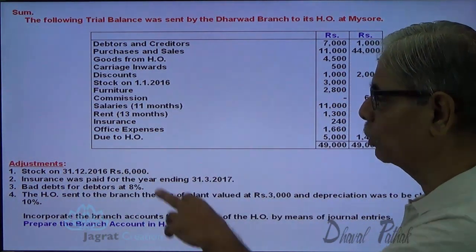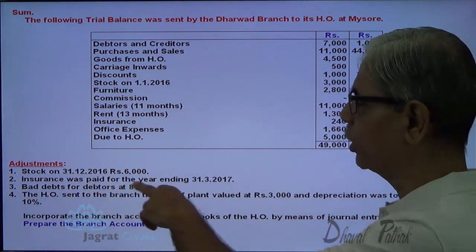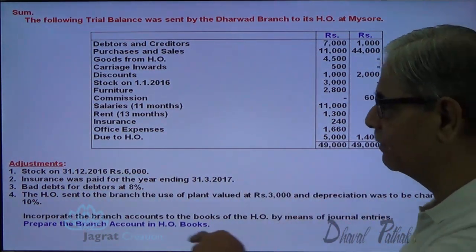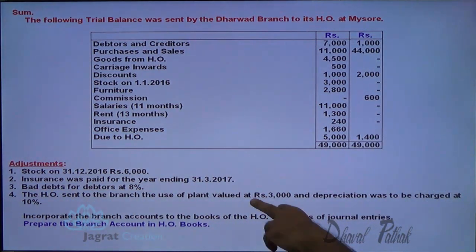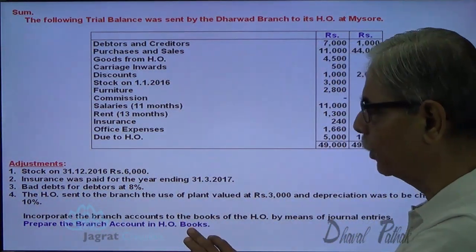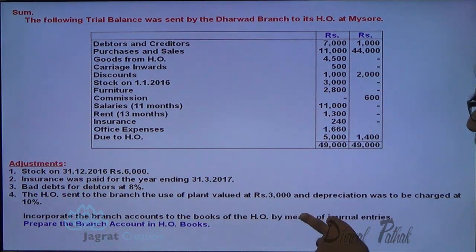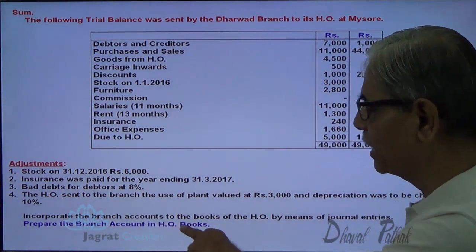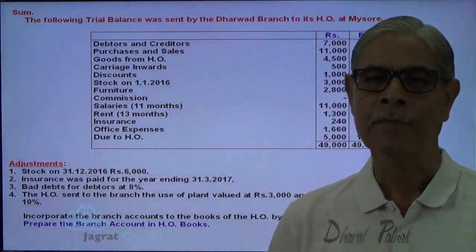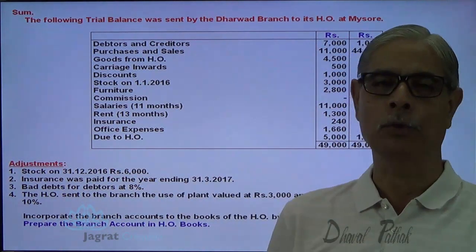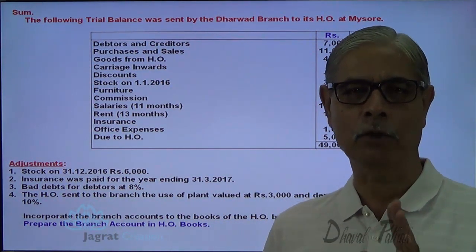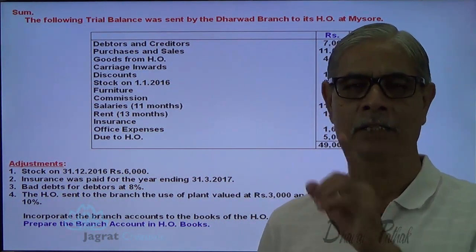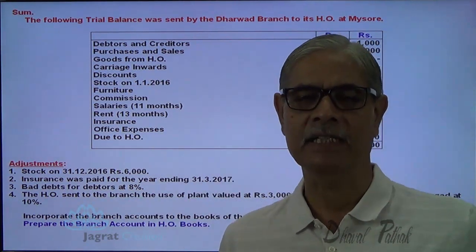Stock on 31st December 2016 is 1,66,000. Insurance was paid for the year ending 31st December 2017. Bad debts for debtors at 8%. HO sends the branch the use of a plant valued at 3,000, and depreciation is to be charged at 10%. We need to incorporate the branch accounts in the books of HO by means of journal entries and prepare the branch account in the books of HO.